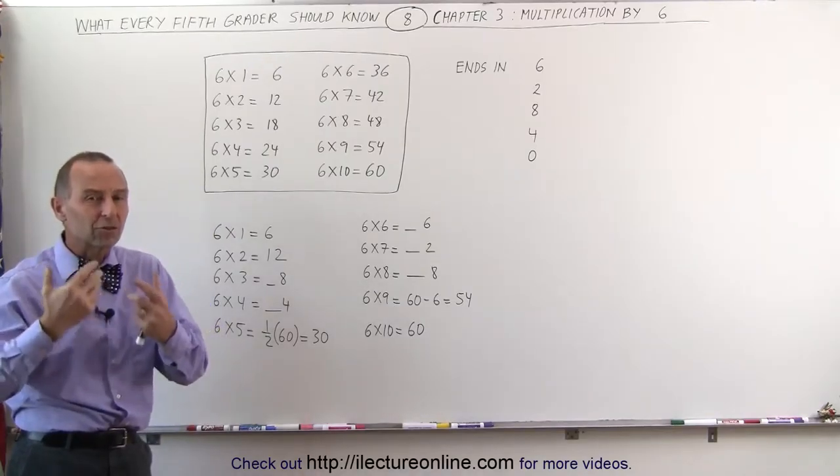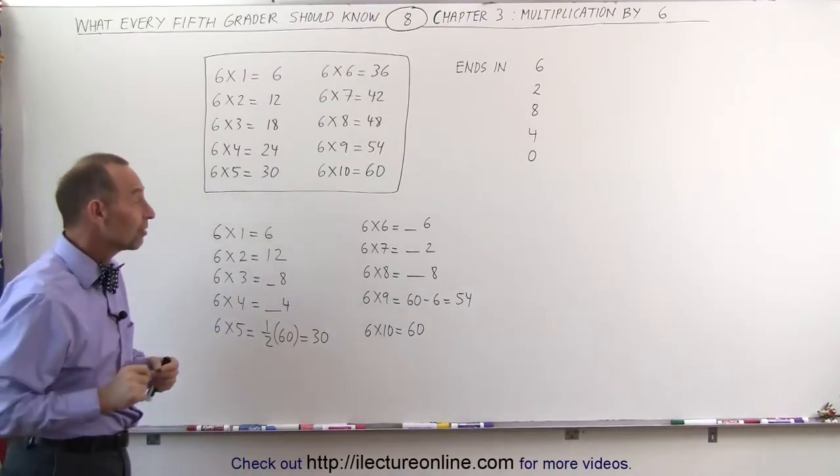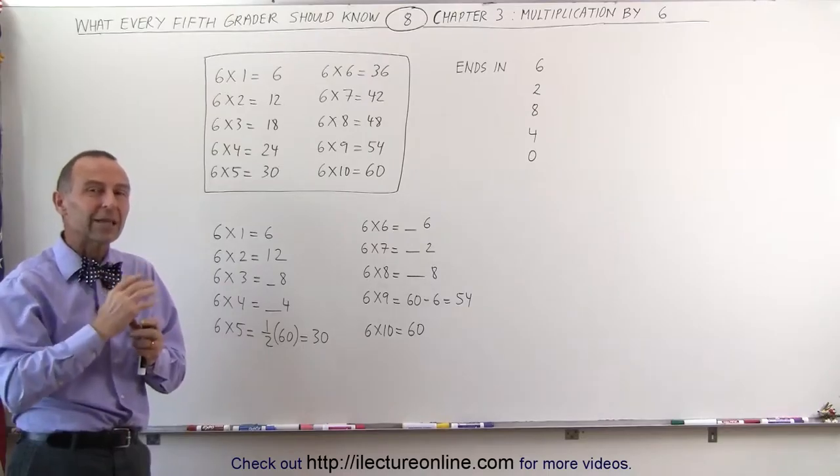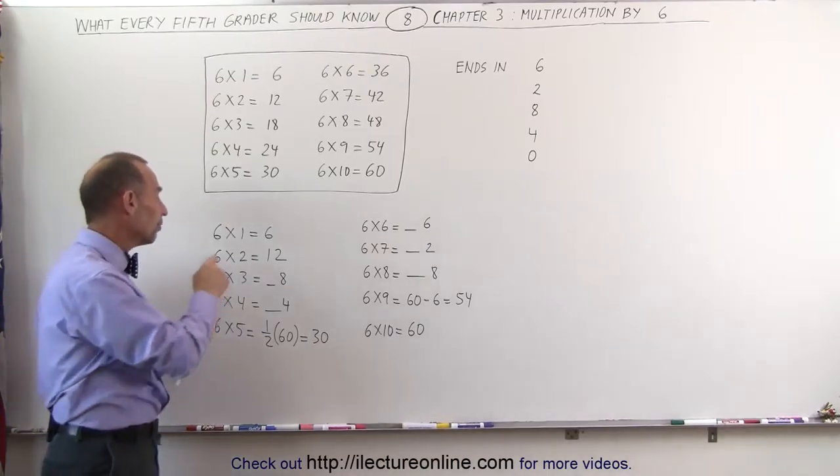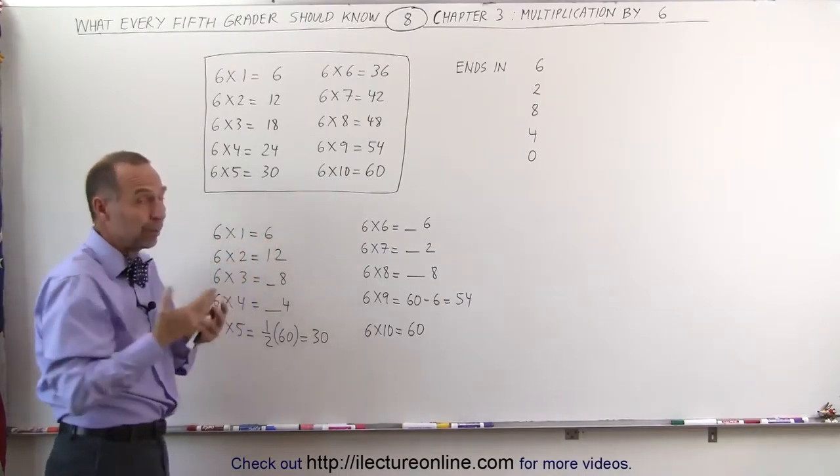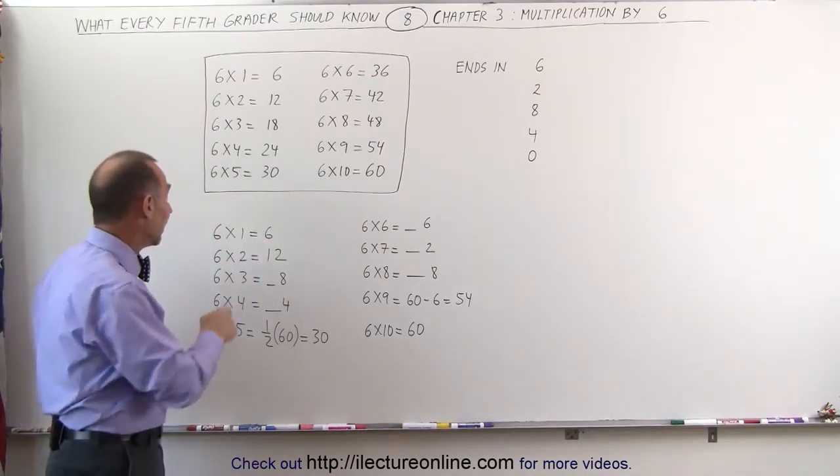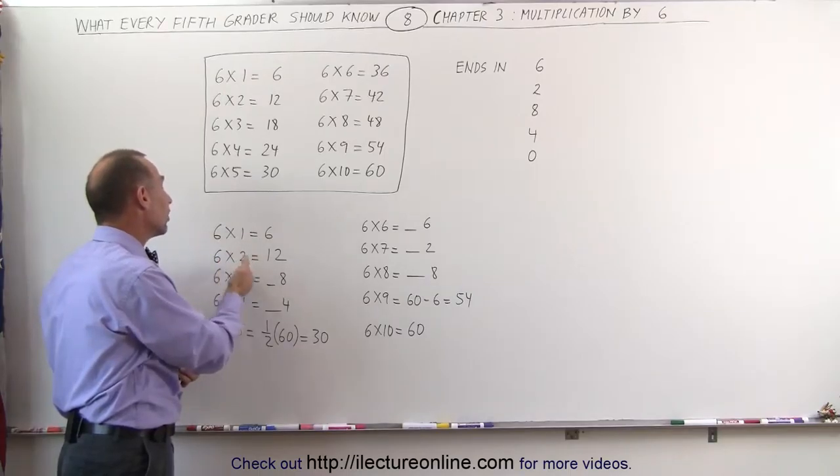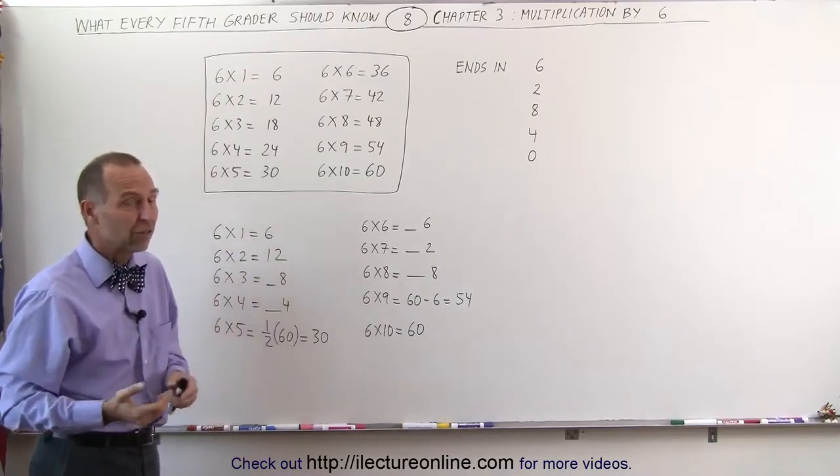You should try to memorize it just like that. But there's some tricks. If you forget one, how do we get that number? How do we get the answer? Well, for the first two, it's fairly straightforward. 6 times 1 is 6, any time you multiply times 1, you get the same number back. And 6 times 2 is 2 times 6, which is 2 of them, which means it's 12.